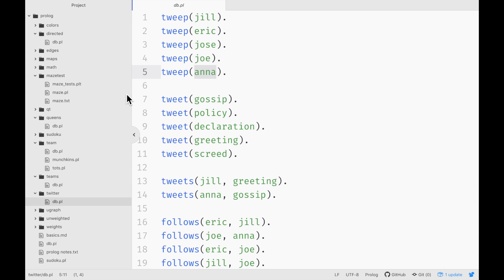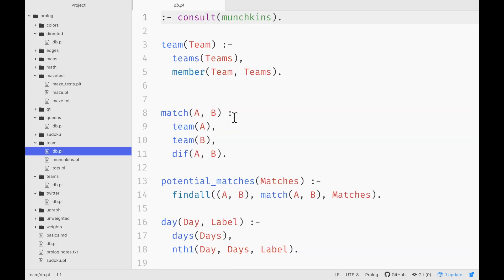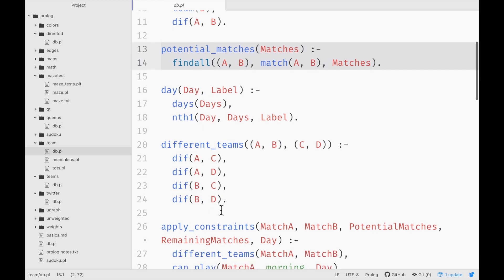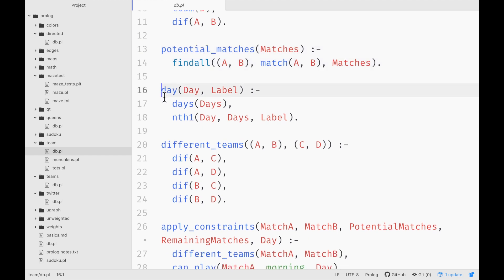Now another type of data that we looked at was scheduling data. And this is an example of a schedule where we describe a team. We describe a match. We list all of the potential matches that our system can create. We describe a day.